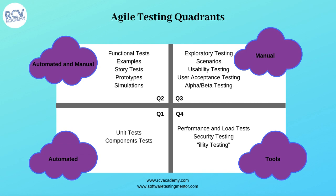Q3 is at the system or user acceptance level, is business-facing, and contains test cases that evaluate the product using realistic scenarios and data — mostly reflecting how the end user or customer wants the product to behave. This quadrant contains exploratory testing, scenario or process flows, usability testing, user acceptance testing, and alpha and beta testing, as Q3 is mostly user or end-to-end scenarios performed on the software.